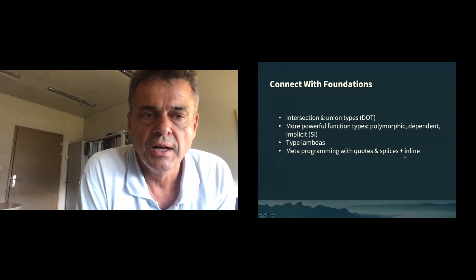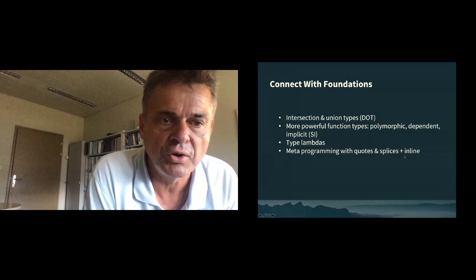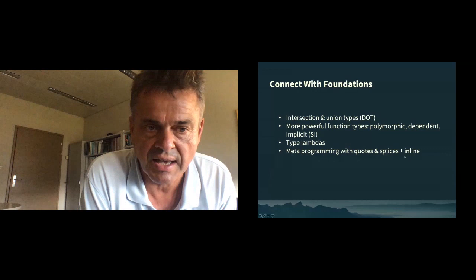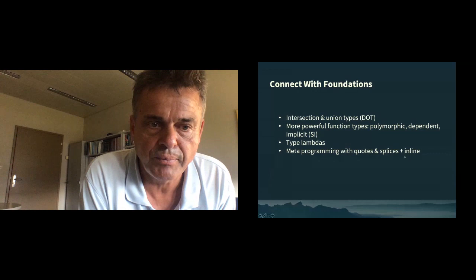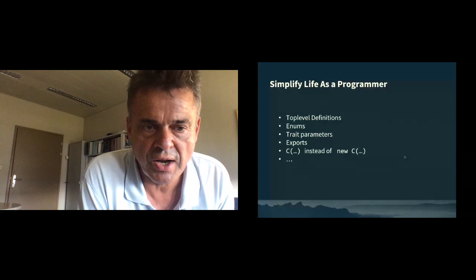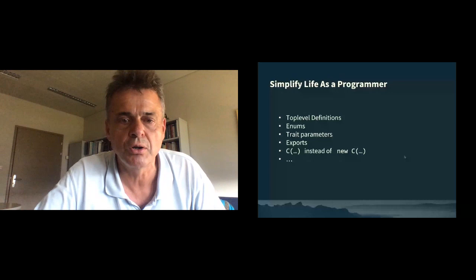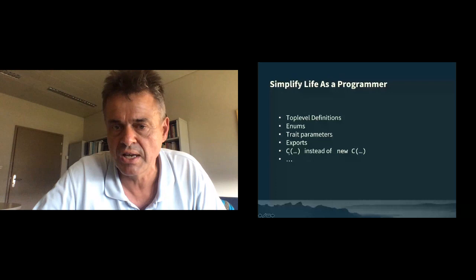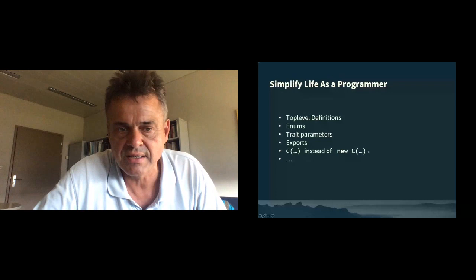For instance, you can now just write top-level definitions — no need to package your definitions in objects or classes anymore. Enums let you get class hierarchies and case hierarchies done very quickly, great for domain modeling. Trait parameters relieve you from having to choose between an abstract class or a trait. There are exports, which let you bundle functionality and present it in facade-like modules. And the `new` keyword has become optional — you can just write the class name with parents instead of `new C`.